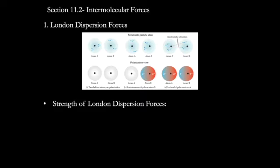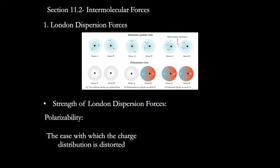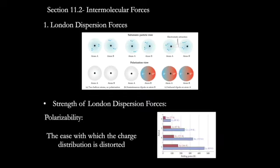Let's talk briefly about how the strength of London dispersion forces can vary. The term I have to use in order to talk about that is polarizability — the ease with which the charge distribution is distorted. When comparing the strength of different London dispersion forces, we're going to be using this term polarizability, or how polarizable a molecule is. As you can see from this chart, neon has a weaker London dispersion force than fluorine does. Argon has weaker than chlorine, krypton than bromine, xenon than iodine.